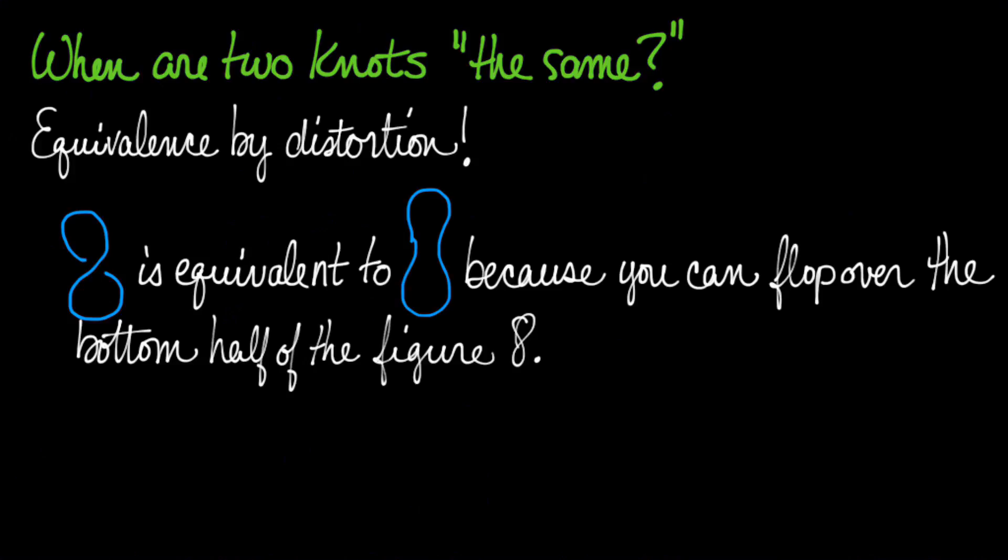So it's just like the other sections. If you want to show two shapes are equivalent by distortion, you just have to tell the story of how you would distort one to the other without cutting or gluing.